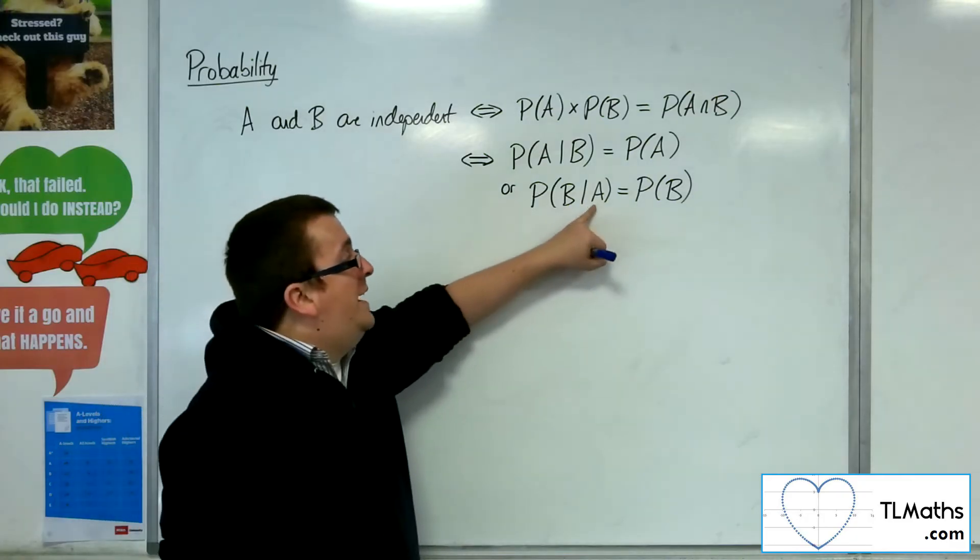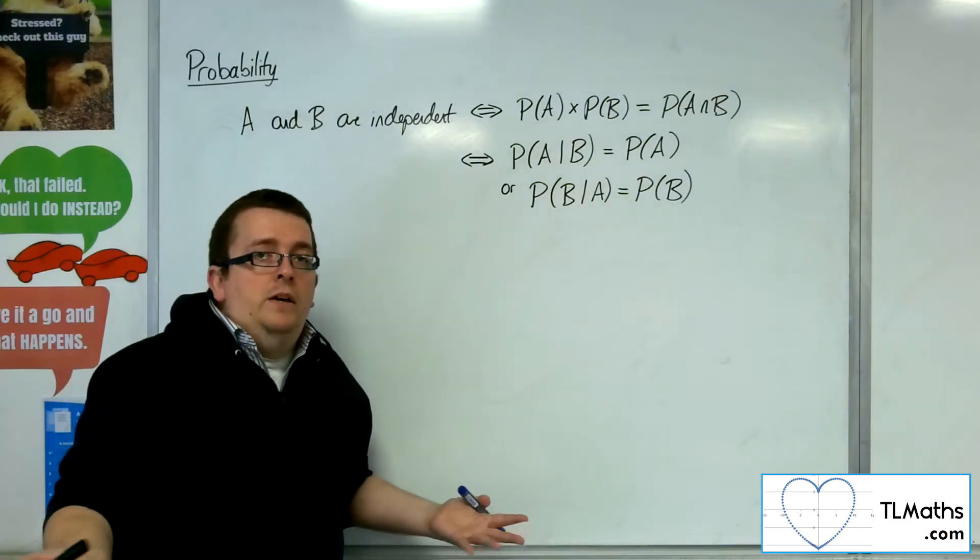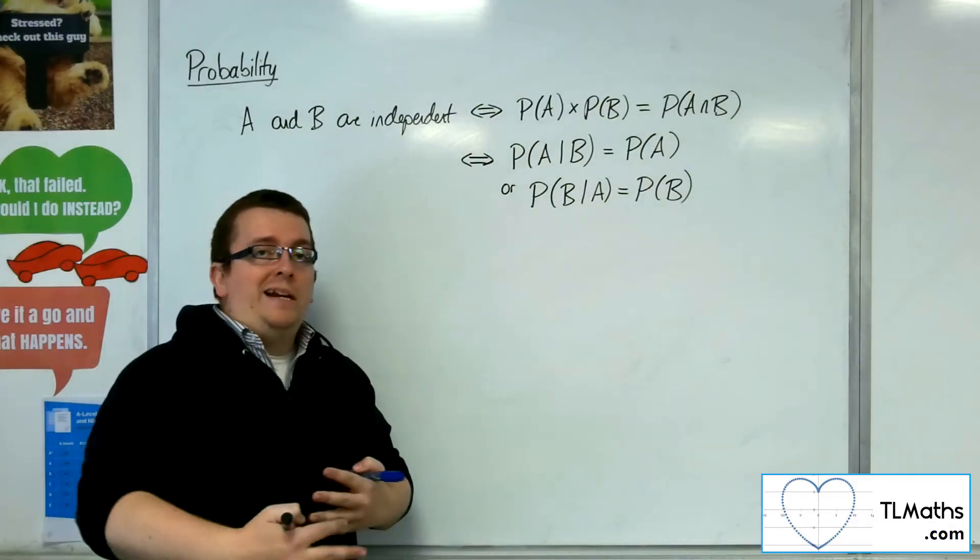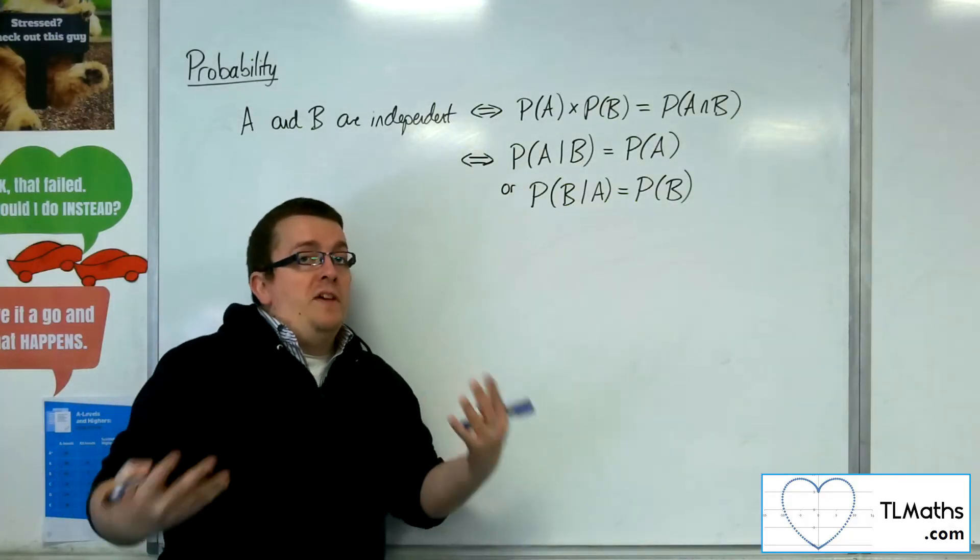And likewise, if A's happened, the probability of B is the same. So it doesn't matter, one has not affected the probability or likelihood of the other happening, and so they are independent.